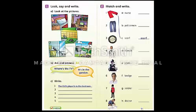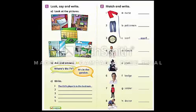Okay, look, say, and write. Look at the pictures — picture 1, picture 2, 3, 4, and 5. What room is this? This is a bedroom. This is a kitchen. This is a bathroom. This is a garden. And this is the library.